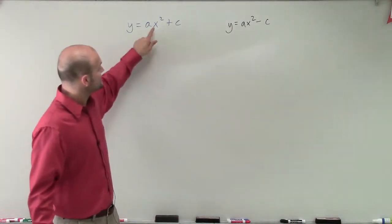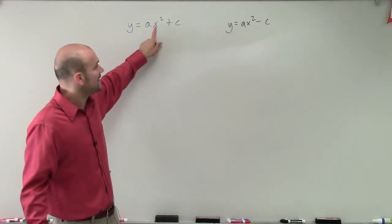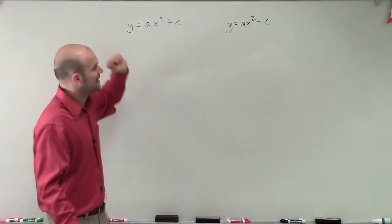Well, in both of these cases, I only have one square. I only have one variable. And then my c could be positive or negative, and I have an a.